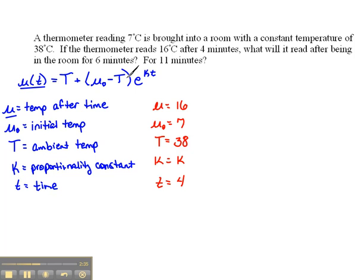Let's plug this into our formula. So 16 will equal, instead of T we're going to use 38, plus instead of mu naught we're using 7 minus that capital T which was 38, e to the K, I don't know, little t is 4.